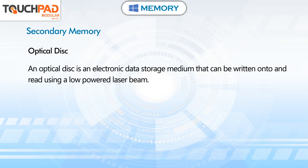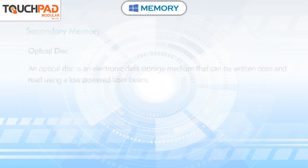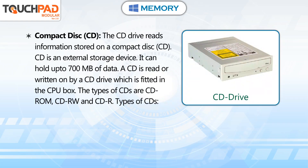Optical disk. An optical disk is an electronic data storage medium that can be written onto and read using a low-powered laser beam. Compact Disk (CD): the CD drive reads information stored on a compact disk. CD is an external storage device that can hold up to 700 MB of data. A CD is read or written by a CD drive fitted in the CPU box. The types of CDs are CD-ROM, CD-RW, and CD-R.